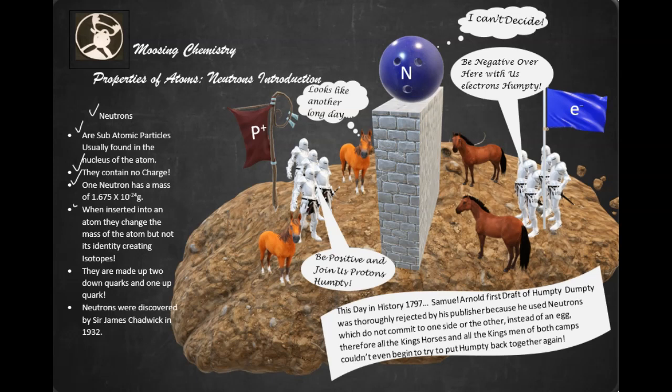So when inserted into an atom, they change the mass of the atom but not its identity, creating an isotope. If you were to add or subtract protons to the nucleus of an atom, you would actually change the identity of that atom and change it into another element. If you add or subtract electrons, you create either cations or anions of that particular atom. But if you add or subtract neutrons, you don't change the electrical charge of the atom, you don't change the identity of the atom — you simply change the mass of the atom.